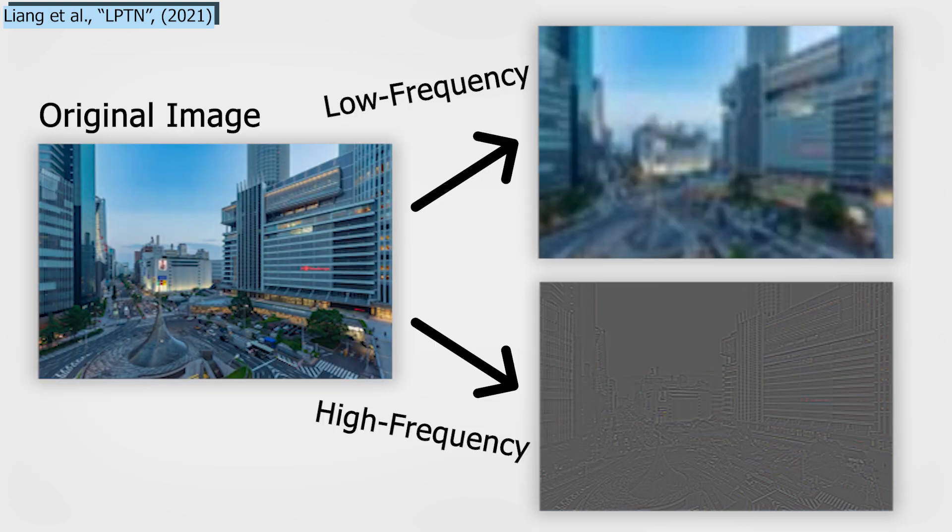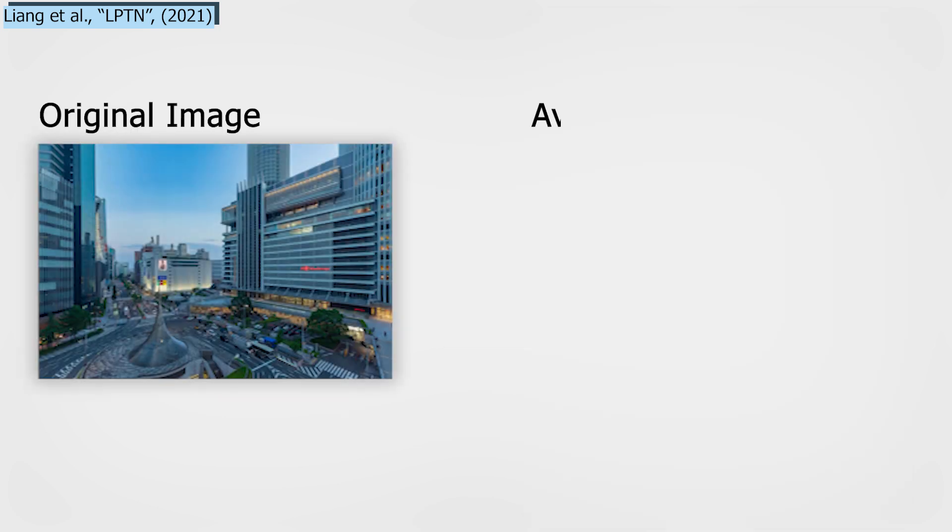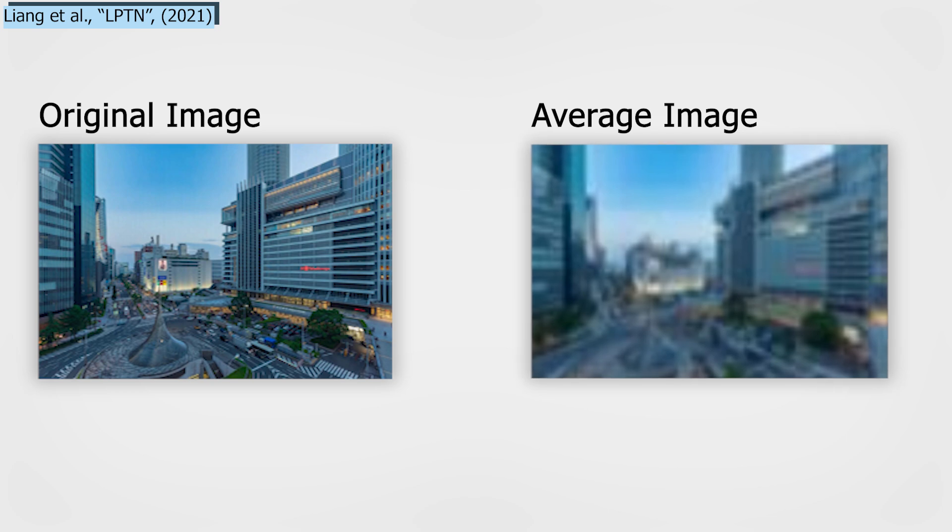This has been a long-standing studied field achieved with a popular technique called Laplacian Pyramid. The main idea of this Laplacian Pyramid method is to decompose the image into high- and low-frequency segments, and reconstruct it afterward. First, we produce an average of the initial image, making it blurry and removing high-frequency components.